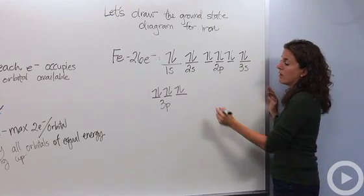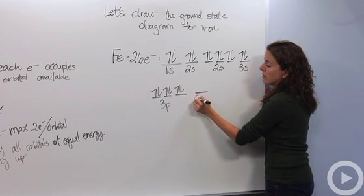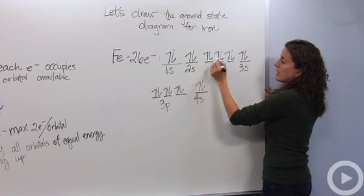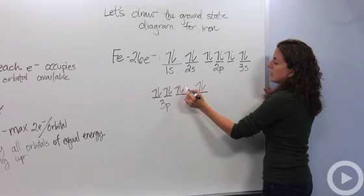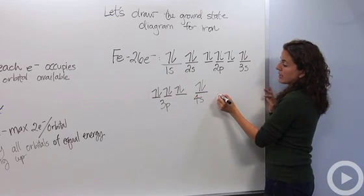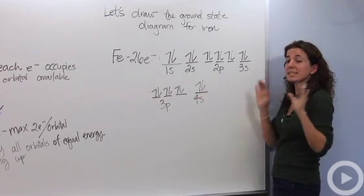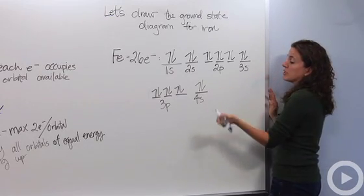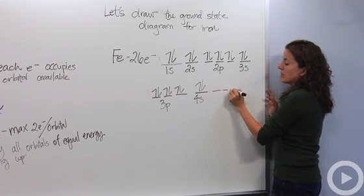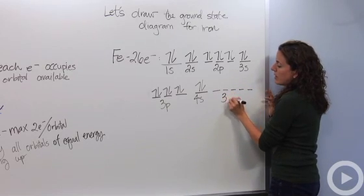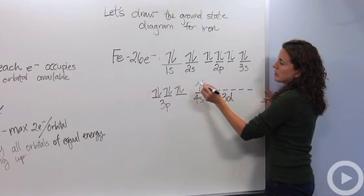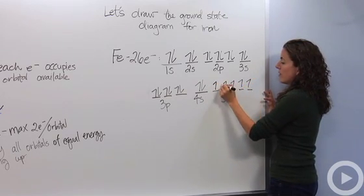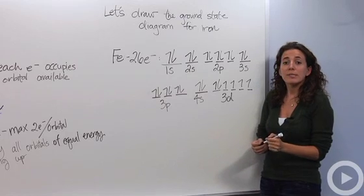After the 3p we're going to go into the 4s. We're not going to go into the 3d, we go right into the 4s. So we have two electrons there. So we have 2, 4, 6, 8, 10, 12, 14, 16, 18, 20. We have 6 electrons left. The next one is 3d. The d sub-level has 5 orbitals, all the same energy. So we're going to draw 5 dashes. 2, 3, 4, 5. All are the 3d. So we're going to draw, I need 6 more. So 1, 2, 3, 4, 5, 6. And this is how you draw orbital diagrams.